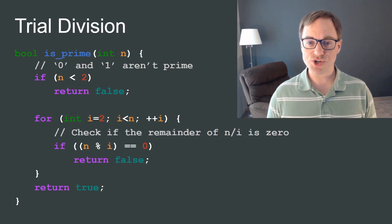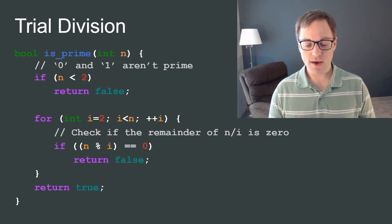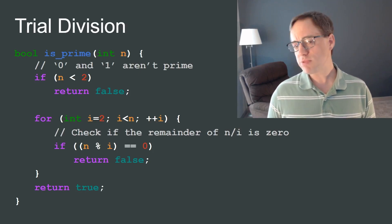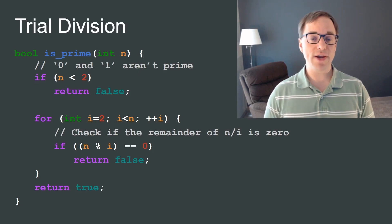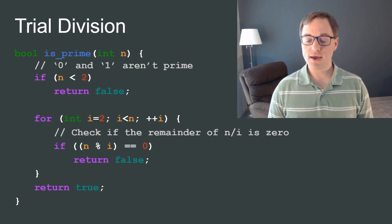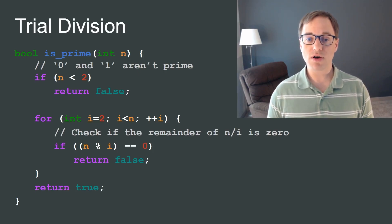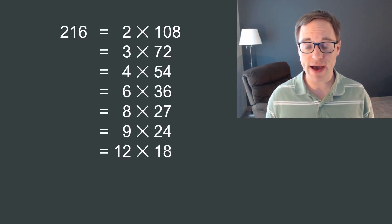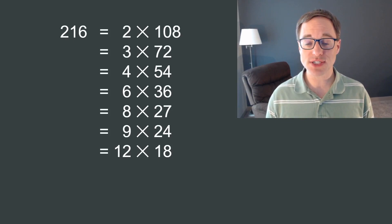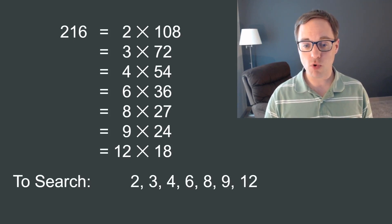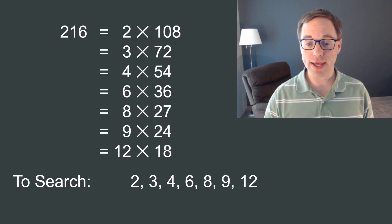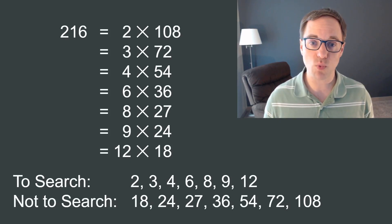As I said a moment ago, this isn't the most efficient way of tackling the problem. I expect even those of you who aren't software engineers or computer scientists could probably suggest some improvements. For example, you might observe that divisors come in pairs, and we actually need to only search for one member of each pair. Consider the number 216, which has seven factor pairs. If we design our search to consider the smaller divisor from each pair, we would want to be sure to search for 2, 3, 4, 6, 8, 9, and 12, while we could safely pass on 18, 24, 27, 36, 54, 72, and 108.